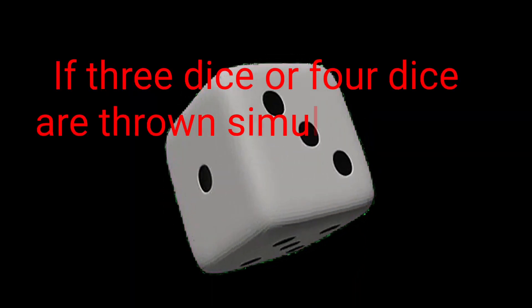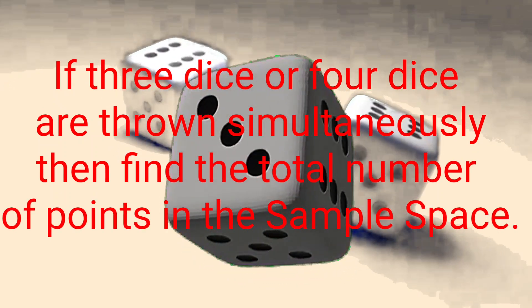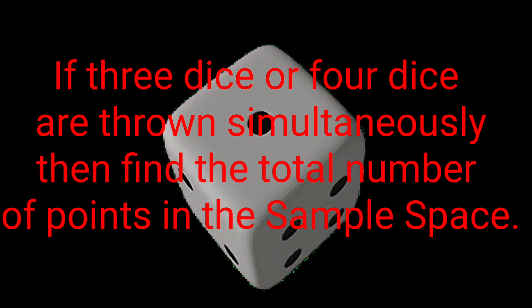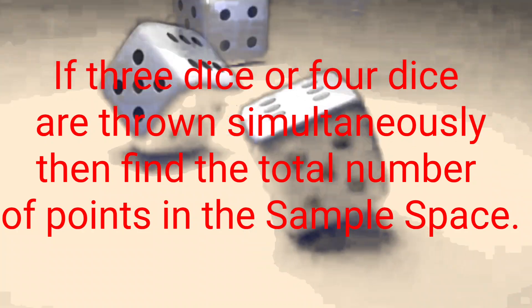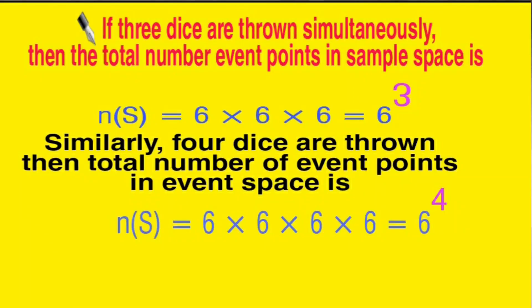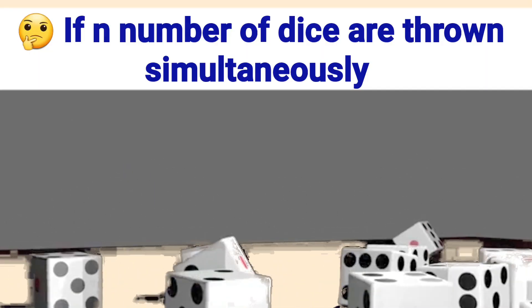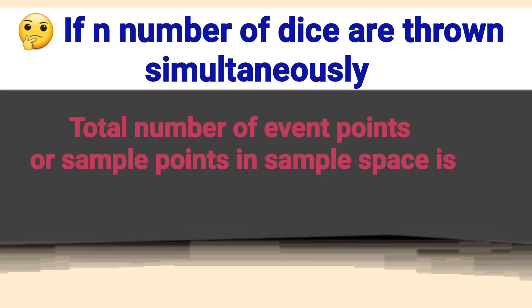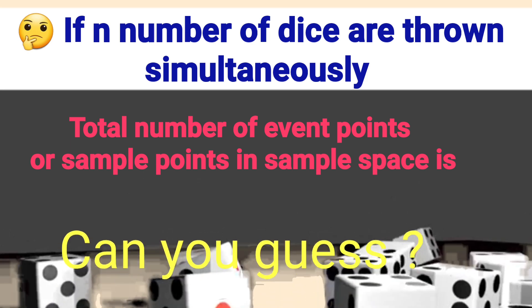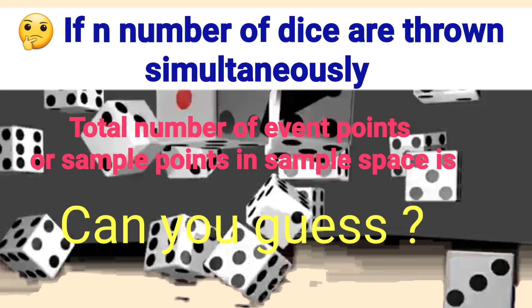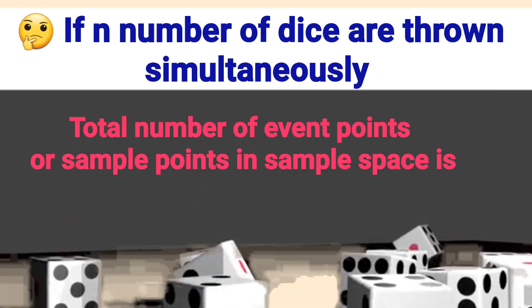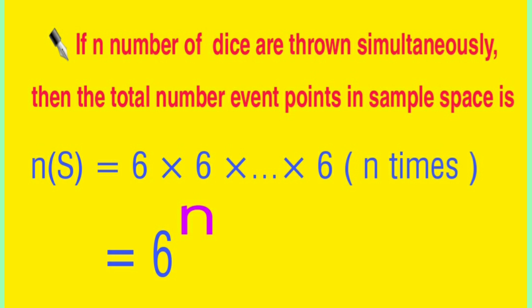Now we extend this result. If 3 dice are thrown simultaneously, the total number of points in the sample space is 6 × 6 × 6 = 6³. When 4 dice are thrown, it is 6⁴. Generalizing: if n dice are thrown simultaneously, then the total number of points in the sample space is 6 to the power n.